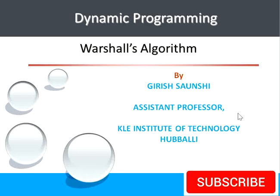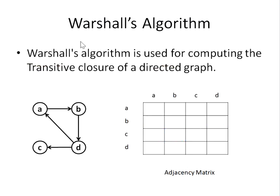Hello everyone. Today I'm going to speak on the topic of dynamic programming, specifically Warshall's algorithm. Warshall's algorithm is used to compute transitive closure — please remember this term, it's very important. Transitive closure is computed for a directed graph. Warshall's algorithm is mostly used for directed graphs, though sometimes it can be used for undirected graphs as well. Importantly, Warshall's algorithm is used for unweighted graphs.